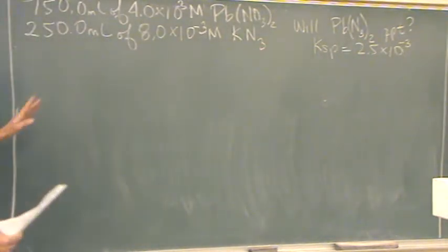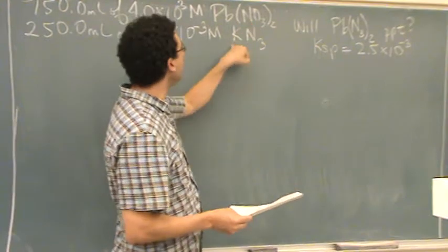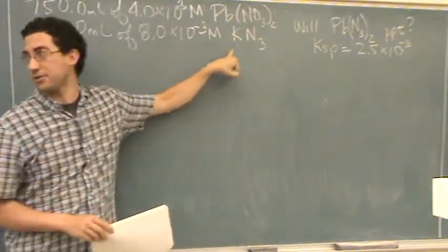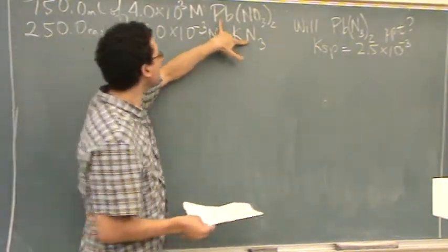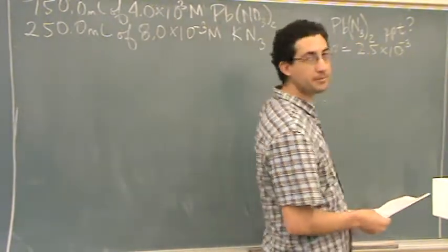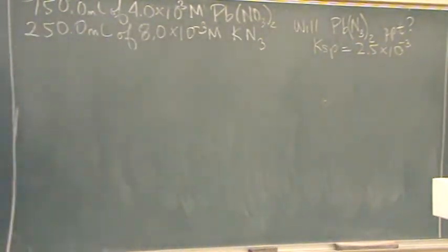So you got these two. What's going to happen? Nitrate and potassium, they're spectator ions. So when these two mix, you want to know will it precipitate. That really means whenever you see 'will it precipitate,' there's a Q that you want to find.